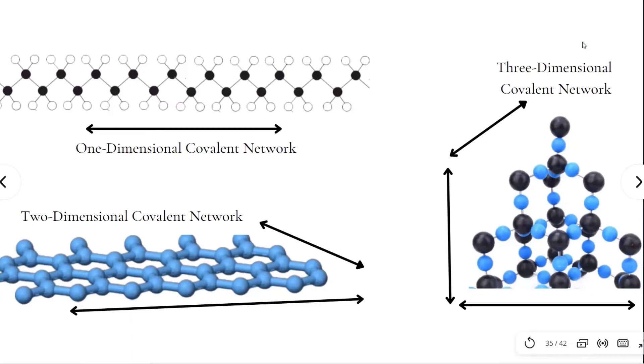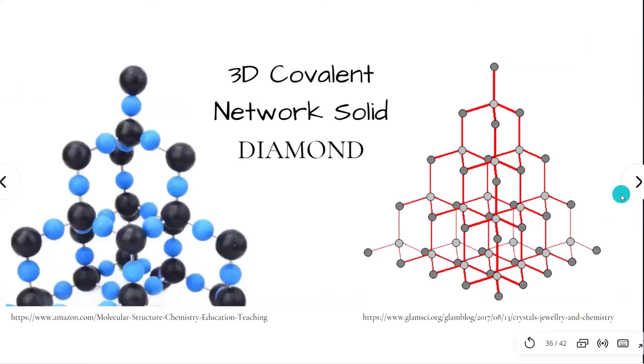The covalent bonds are formed from two atoms sharing their electrons and are incredibly strong. Silicon dioxide and diamond are two examples of 3D covalent network solids. Silicon dioxide is made up of silicon and oxygen atoms, all covalently bonded to each other and extending in three directions.